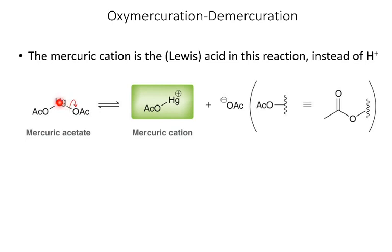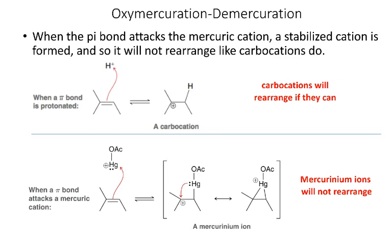If we start with mercuric acetate, this can dissociate into the mercuric cation, which is our active reagent in this oxy-mercuration-demercuration process. Note that OAc refers to the acetate group. In acid-catalyzed hydration we end up with carbocation intermediates that will rearrange if they can. In contrast, with oxy-mercuration-demercuration, the pi bond attacks the mercury, and we get a resonance structure where the lone pair on mercury forms a bond with the carbocation, giving us this bridged intermediate. The presence of this bridged intermediate prevents the carbocation from rearranging.